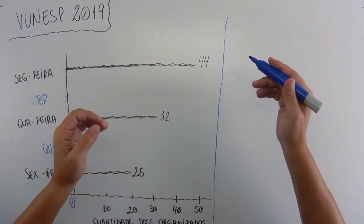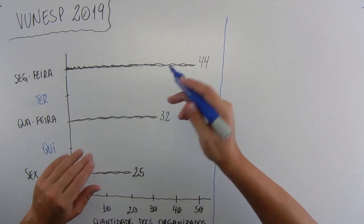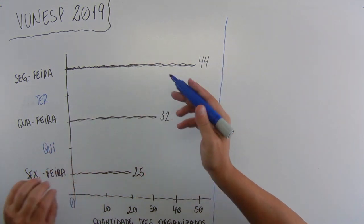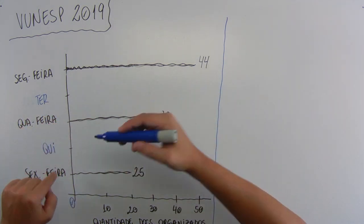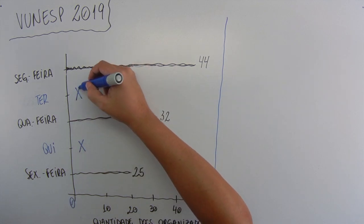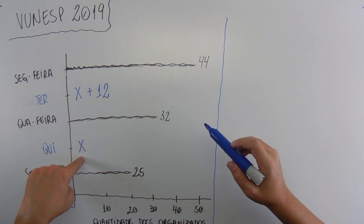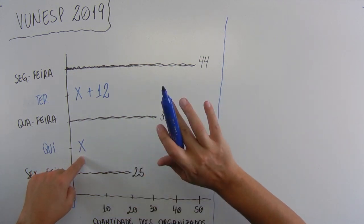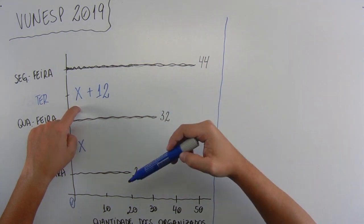Knowing that the quantity of documents organized on Tuesday exceeded by 12 the quantity of documents organized on Thursday. So, on Tuesday, it was 12 documents more than Thursday. Then, let's call Thursday X. And Tuesday was X plus 12. Following the problem statement. So, on Thursday there was X, a quantity that we don't know, and Tuesday had 12 documents more than on Thursday.